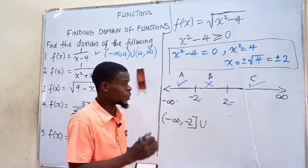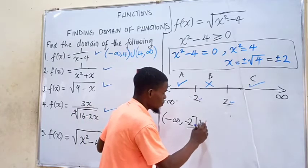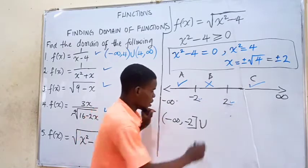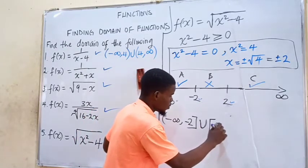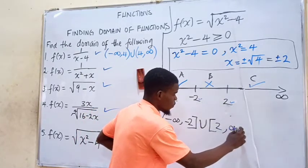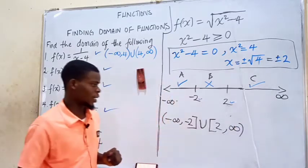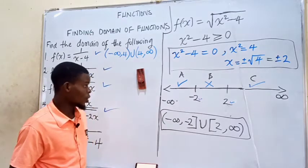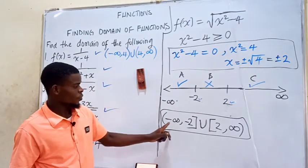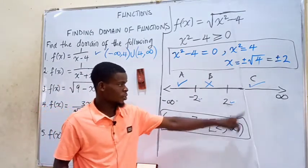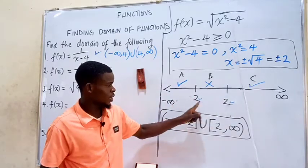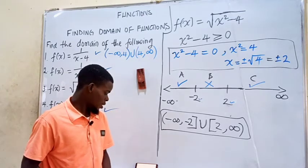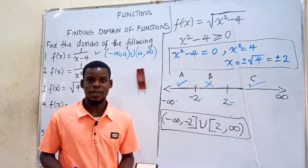We do not take B because it did not satisfy the inequality. Since both boundary points negative 2 and positive 2 are included, we use closed brackets for them. So the domain of the given function is the interval (−∞, −2] union [2, +∞). Thanks for watching and please subscribe to my channel.